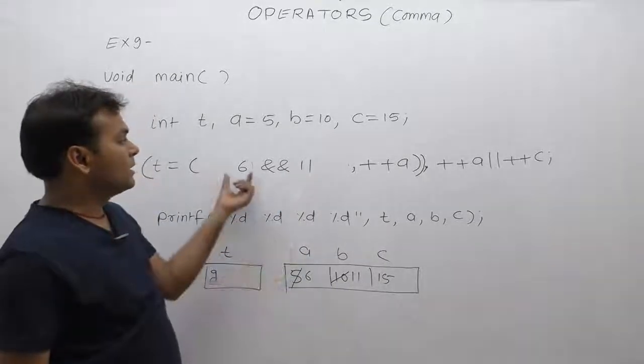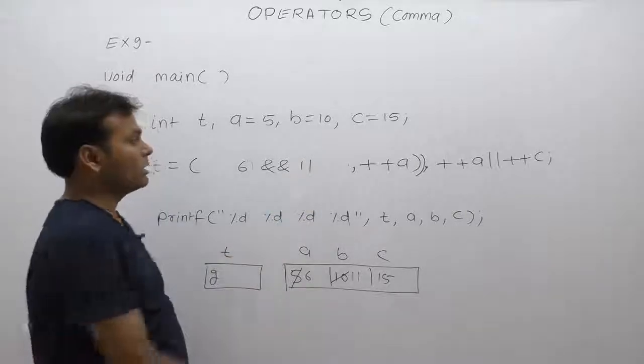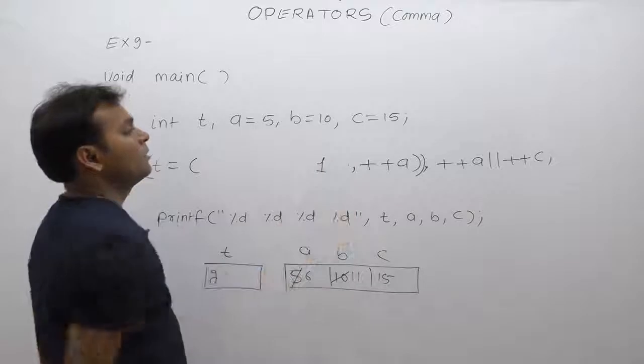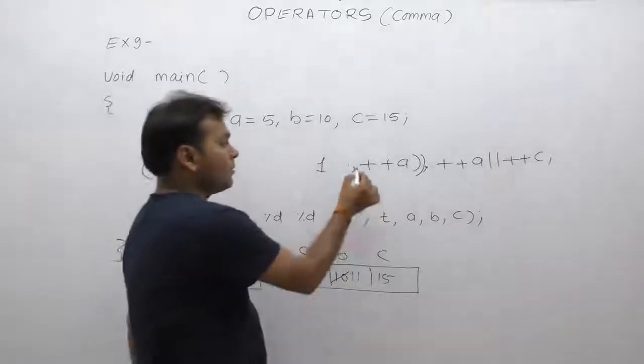Means first condition is non-zero, second is also non-zero. In both cases, the reality is true. True means 1. Then, again, comma.